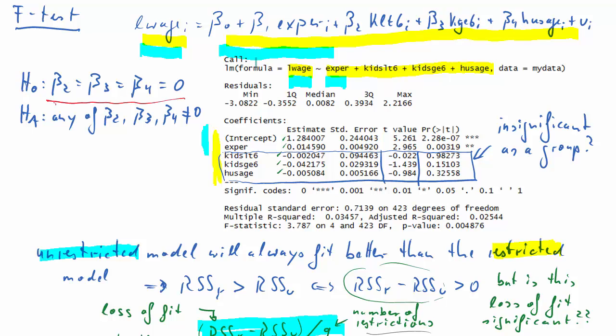So that restriction, it is valid to impose that. So it's really the small, the restricted model, the blue model, that is sort of the relevant model. We don't need these three variables in our model.